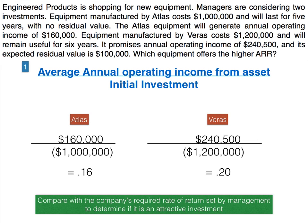Using form one of the original method — average annual operating income divided by initial investment — Atlas gives 16% and Veras gives 20%, making Veras the better of the two. However, this alone doesn't tell us if it's a good investment for our specific company, because we don't know the required rate of return. If the company's required rate of return is 25%, neither would qualify; if it's 18%, Veras would be appropriate.